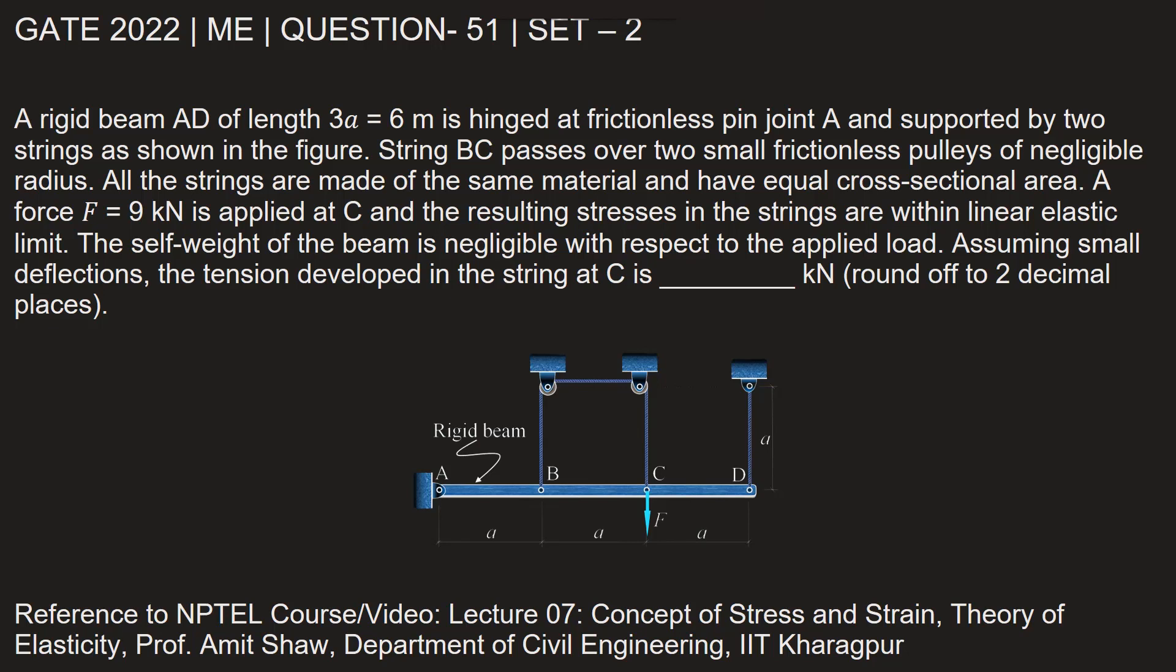String BC passes over two small frictionless pulleys of negligible radius. All the strings are made of the same material and have equal cross-sectional area. A force F equal to 9 kN is applied at C and the resulting stresses in the strings are within linear elastic limit. The self weight of the beam is negligible with respect to the applied load. Assuming small deflections, the tension developed in the string at C is dash kN rounded off to two decimal places.